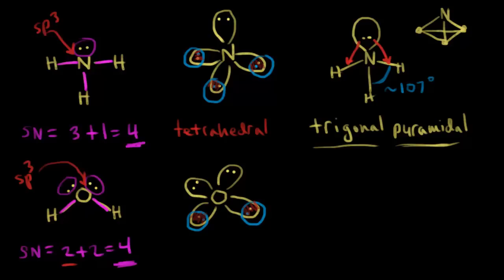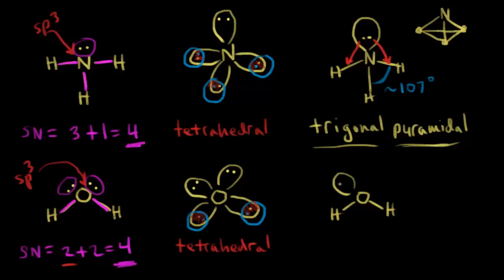The arrangement of these electron pairs is tetrahedral — VSEPR theory says the electrons repel, so the electron group geometry is tetrahedral. But that's not the geometry of the entire molecule. For water, we have two lone pairs of electrons repelling the bonding electrons, as opposed to ammonia's one lone pair. That's going to change the bond angle even more — it decreases to approximately 105 degrees.